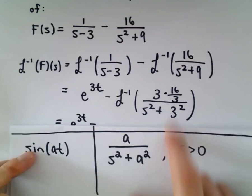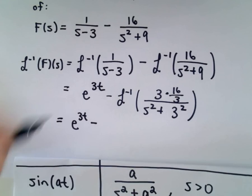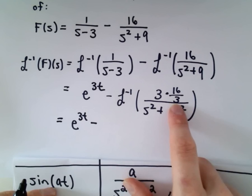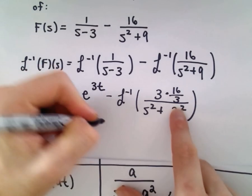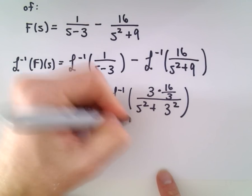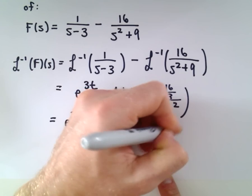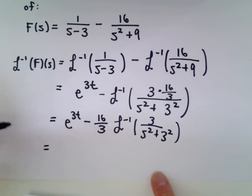The reason I'm doing this is to make it agree with the table. Remember we can factor constants outside of the Laplace transform and also the inverse Laplace transform. So we can pull that 16 over 3 out front and then we're just left with the inverse Laplace transform of 3 over s squared plus 3 squared.